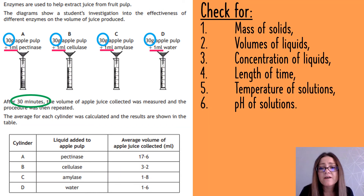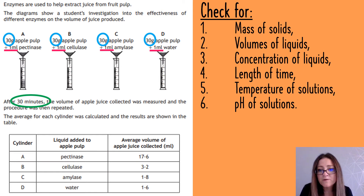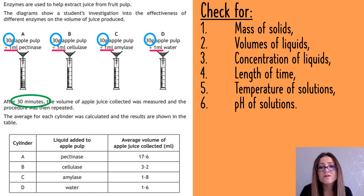Generally speaking, check for these: Have they included masses? Have they included volumes of liquids? Have they included concentrations? Have they looked at the length of time, the temperature, or the pH of the solutions? From that list, there will normally be two you can pick that haven't been mentioned in the question. These are things you have to keep the same because if you change them, they could affect your results.